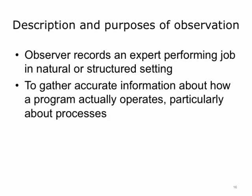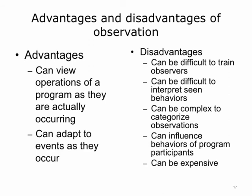In observational methods, the observer records an expert performing a job in a natural or structured setting, and they are used to gather accurate information about how a program actually operates, particularly about processes. This is the most effective method if you want to view workplace operations as they are actually occurring, and the observer can adapt to events as they occur. Disadvantages include that this method is expensive, it can be difficult to train observers and interpret observed behaviors, and being observed can influence the behavior of participants.